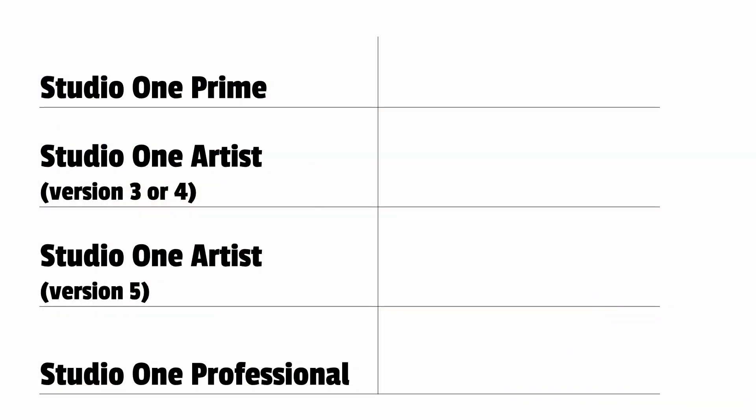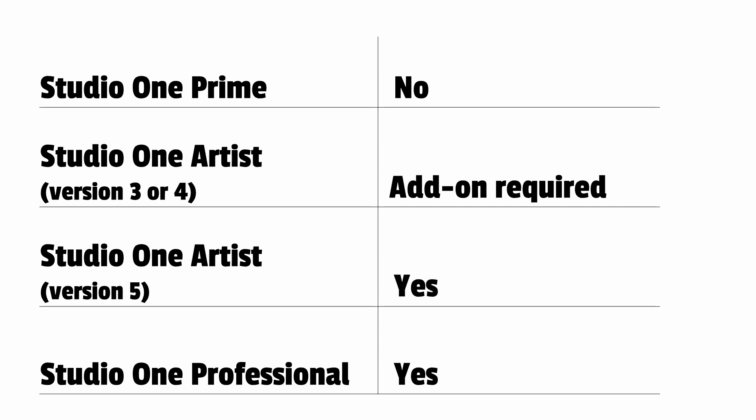So that is what I would recommend. Of course, you might have some reasons why you'd still not want to do that — that's up to you. Just to recap: if you're using Studio One Prime, you cannot use third-party plugins. If you're using Studio One Professional, yes, you can. If you're using Studio One Artist version 3 or 4 and you still want third-party plugins, you do need that extra add-on. If you're using Studio One Artist version 5, you do not need any add-on and you can still use third-party plugins.